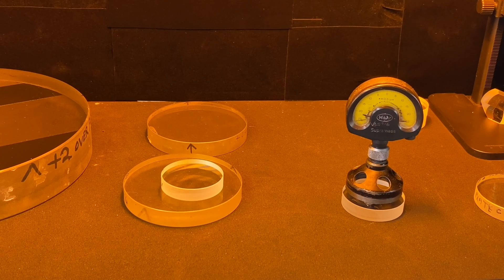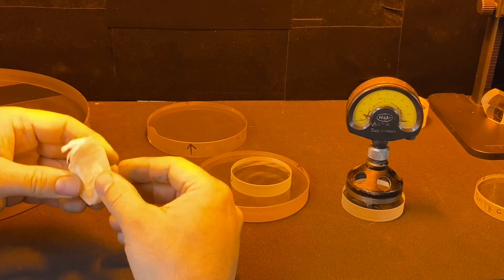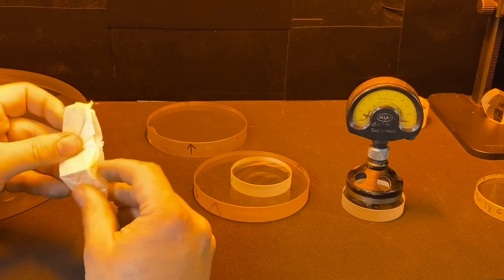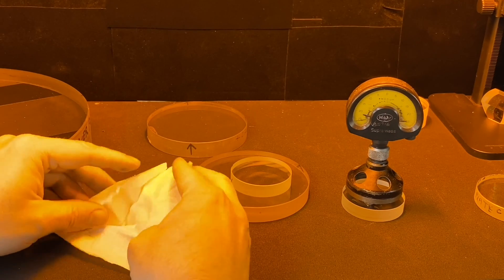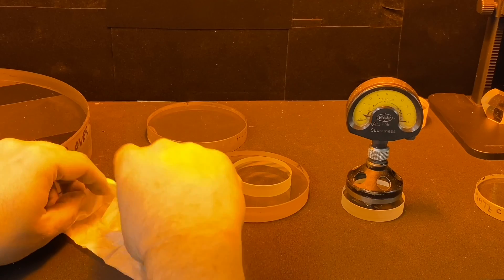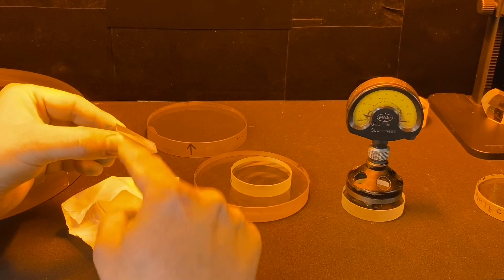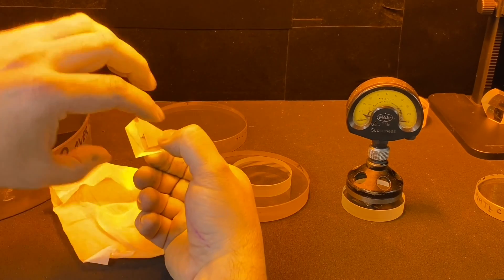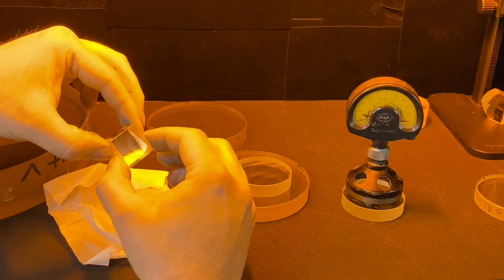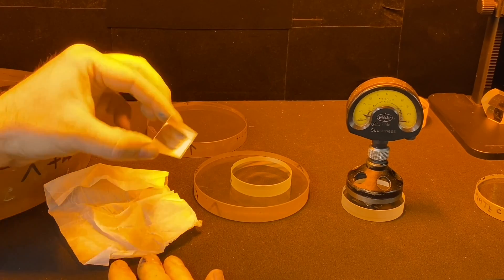An example of some of the things I make are these little prisms here. This is a 90-45 degree prism, so the reason it's called that is that it has a 90 degree angle there and then it's 45 degrees here and here. This is typical of the kind of parts I make for various customers.